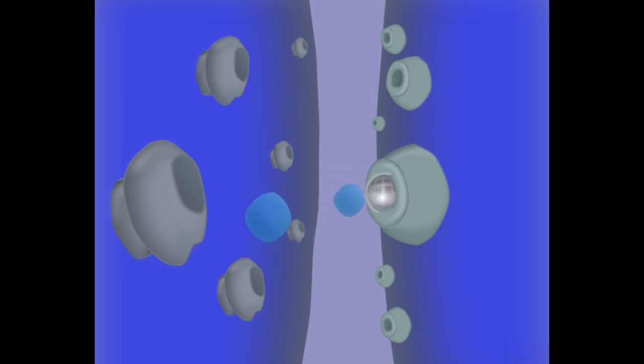This uptake of MDMA causes an increase in serotonin levels in the synapse in three ways. First, as the MDMA attaches to the transporter, it blocks the reuptake of the serotonin.